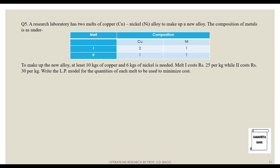The next problem is on alloy mix. A research laboratory has two melts of copper-nickel alloy to make up a new alloy. The composition is: melt one has copper and nickel in ratio 2:1 (so 2/3 copper and 1/3 nickel), and melt two has copper and nickel in ratio 1:1 (so 1/2 and 1/2). At least 10 kg of copper and 6 kg of nickel are needed.